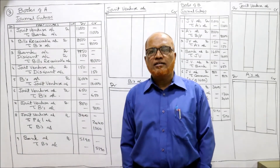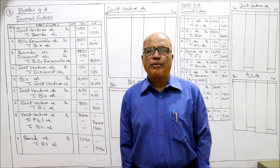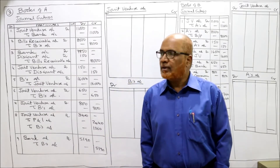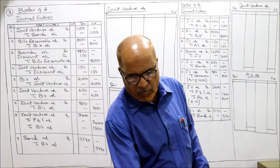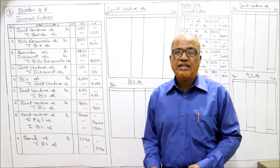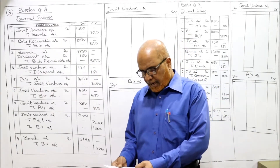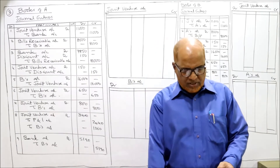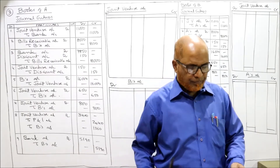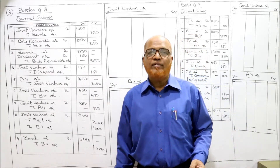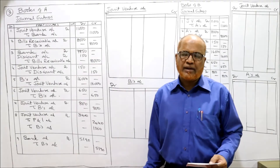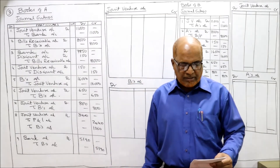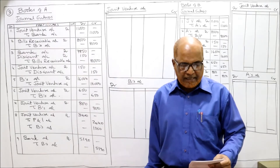Hello students, now we'll start the next problem - Problem number three. In the last video we completed two problems on joint venture. Now carefully see the third problem: A and B enter into a joint venture sharing profits 3/5 and 2/5. The profit sharing ratio of the co-venturers is given - A gets 3/5 and B gets 2/5.